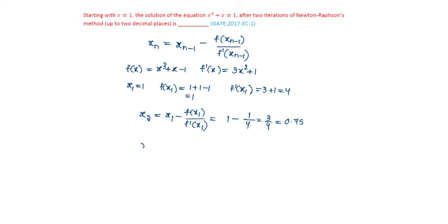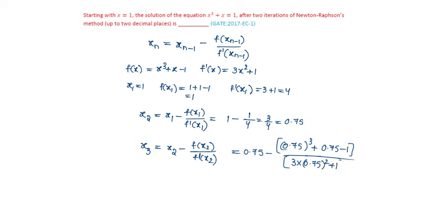The second iteration: x₃ = x₂ - f(x₂)/f'(x₂) = 0.75 - [(0.75)³ + 0.75 - 1]/[3(0.75)² + 1] = 0.686.